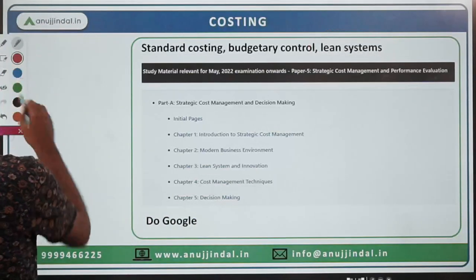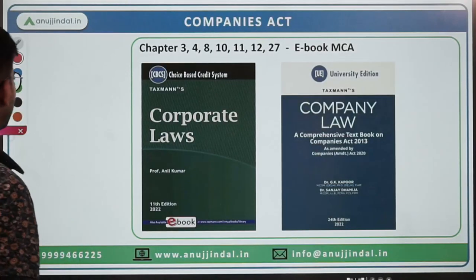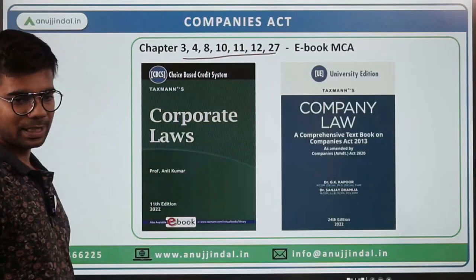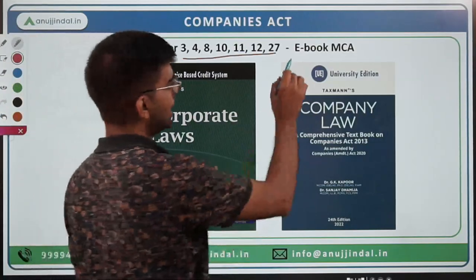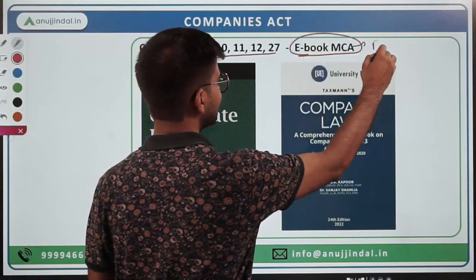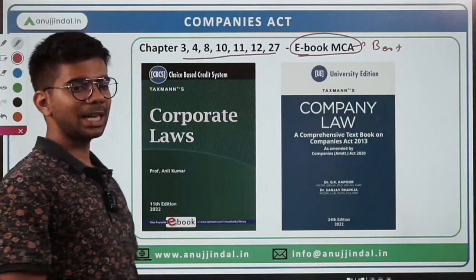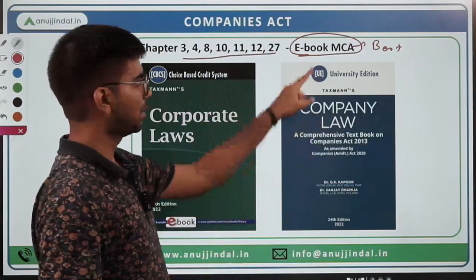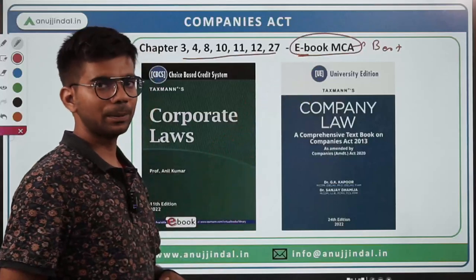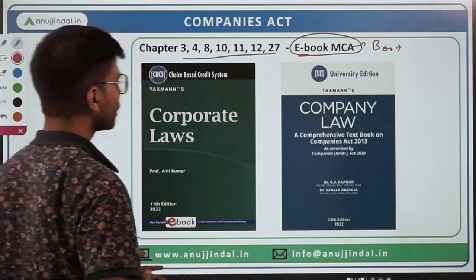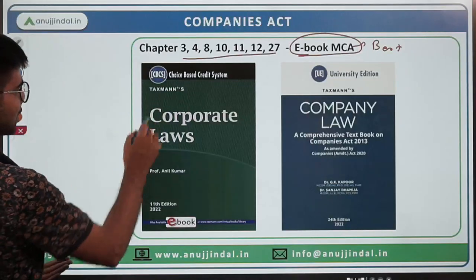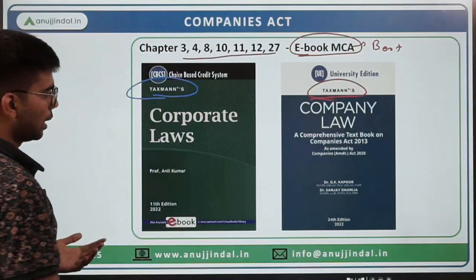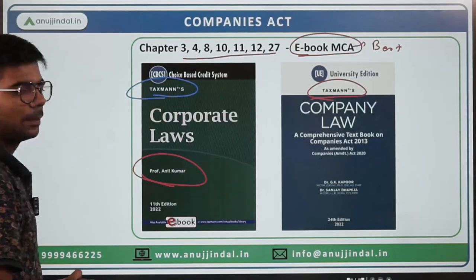For Companies Act, a very specific syllabus has been given — Chapters 3, 4, 8, 10, 11, 12, and 27, which are 7 chapters mentioned in the syllabus. The ebook of MCA (Ministry of Corporate Affairs) website is the best source because it is updated, and in Companies Act we need updated content. You may also refer to a good textbook by Taxman — by Professor Anil Kumar — but make sure it is the latest edition.